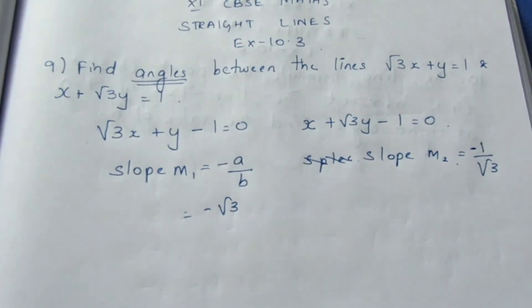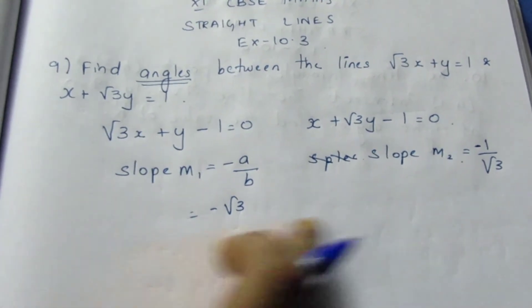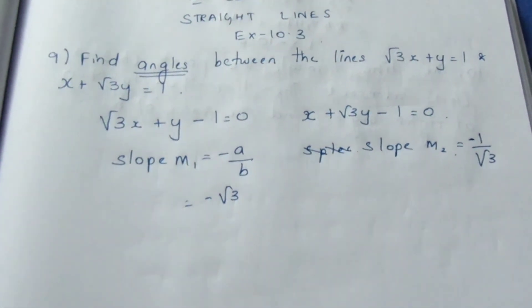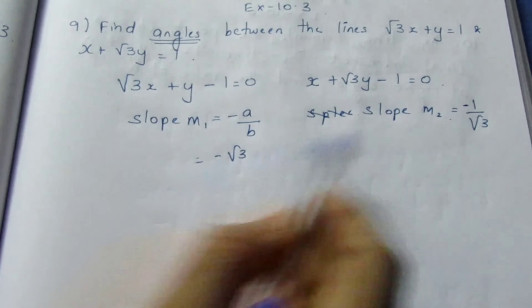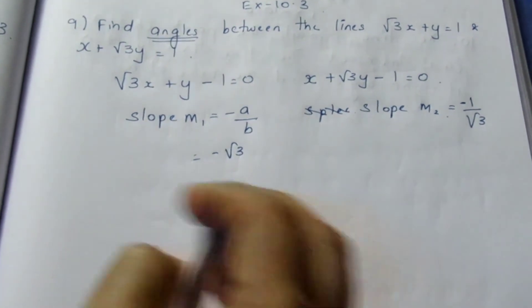-1/√3 is the m1 and m2 value. Now we have found the m1 and m2 value.